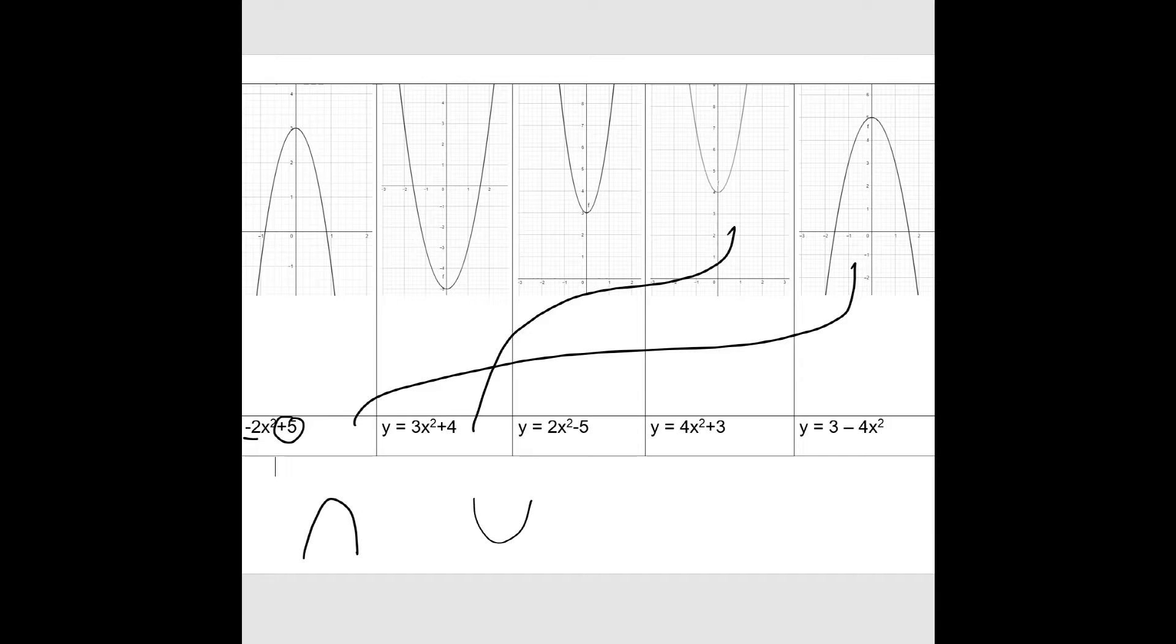y equals 2x squared minus 5 is going to be the second graph. And y equals 4x squared plus 3, it's a happy quadratic. That's going to be the third one. And y equals 3 minus 4x squared should be the first graph. So, that's how you should have identified the graphs.